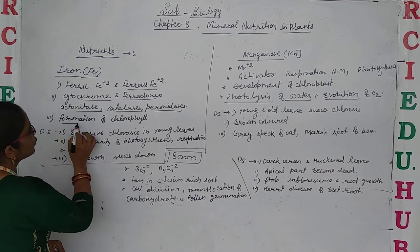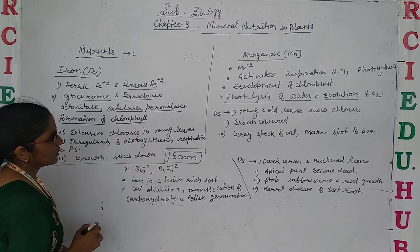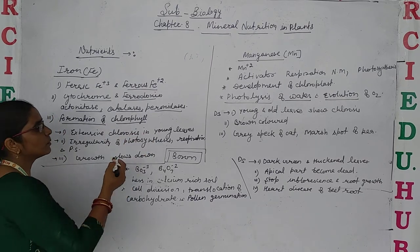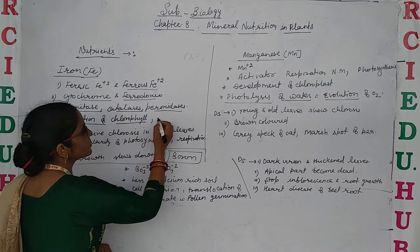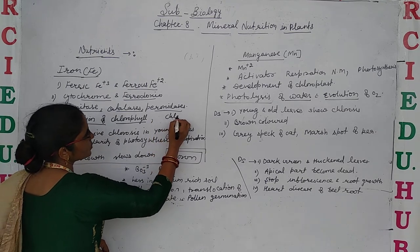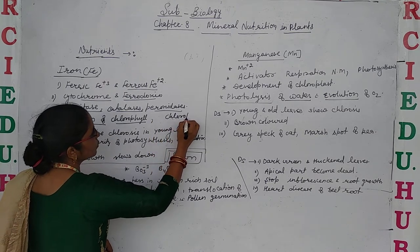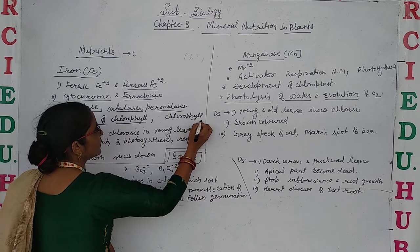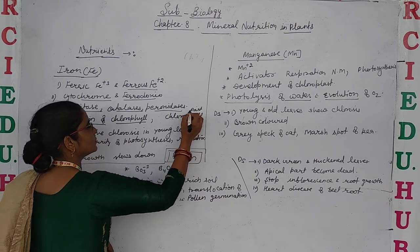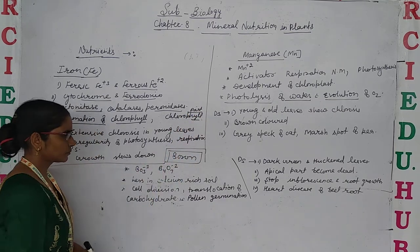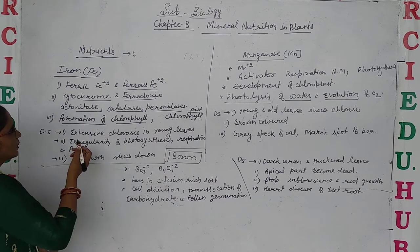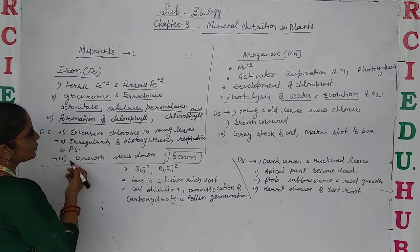Iron plays an important role in the formation of chlorophyll, but it is itself not a part of the structure of chlorophyll. It means it is not a structural component of chlorophyll.